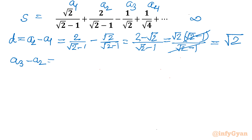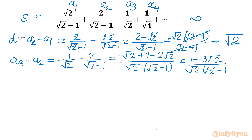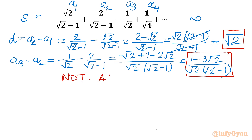Now let's check A3 minus A2: that is (−1/√2) minus 2/(√2−1). Writing with common denominator gives (−√2+1−2√2) over √2(√2−1). Since A2 minus A1 does not match A3 minus A2, we can conclude this series is not an AP.